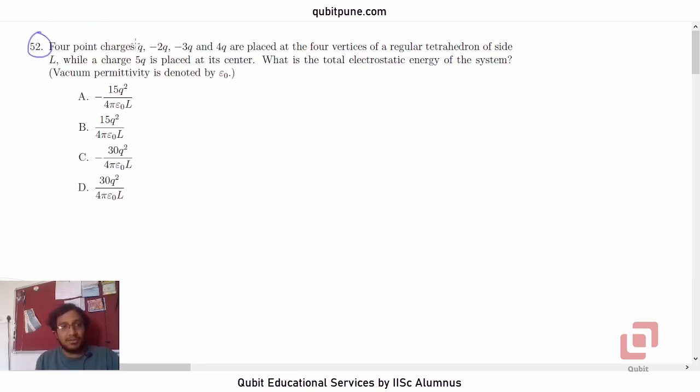Four point charges q, negative 2q, negative 3q and 4q are placed at the four vertices of a regular tetrahedron of side L, while a charge 5q is placed at its center. What is the total electrostatic energy of the system? Vacuum permittivity is denoted by epsilon naught. And we are going to assume that all these charges are kept in vacuum.